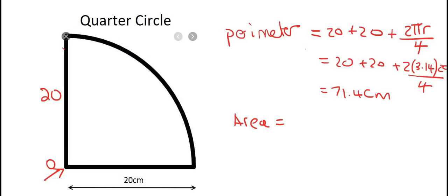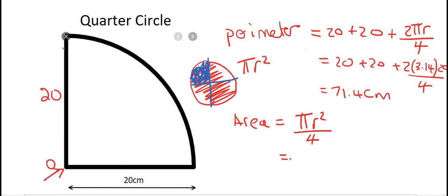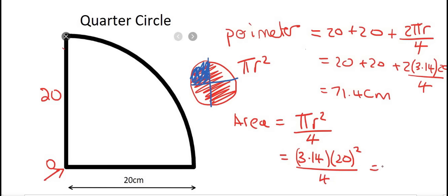For the area: if it was a full circle you would say pi r squared, but we only want one quarter, so we divide that answer by 4. So that's 3.14 multiplied by radius 20 to the power of 2, divided by 4. That gives you 314 centimeters squared. Remember, area always gets a squared unit. And there we have it — in this lesson you learned about circles. Thank you very much for watching.